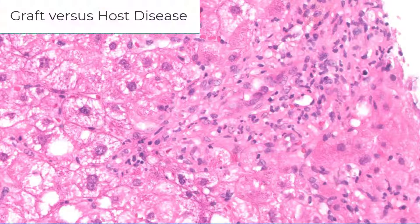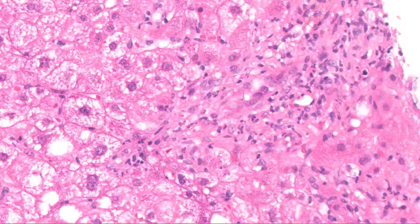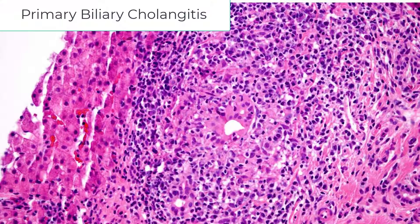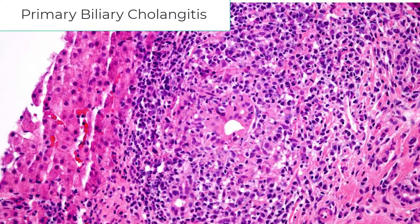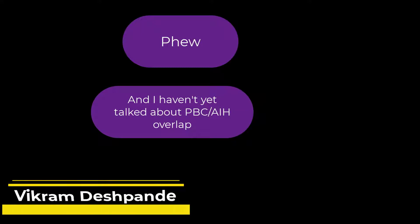One final form of bile duct injury: notice that the bile duct is barely recognizable and many of the biliary cells have essentially dropped out. This is graft-versus-host disease, where the target cells are not the hepatocytes but the bile duct cells. Finally, here's a classic image of a florid duct lesion in PBC. Although I've offered a relatively wide differential diagnosis, I can't emphasize this enough: if you can prove bile duct injury in a middle-aged woman with a positive AMA, that is PBC until proven otherwise.